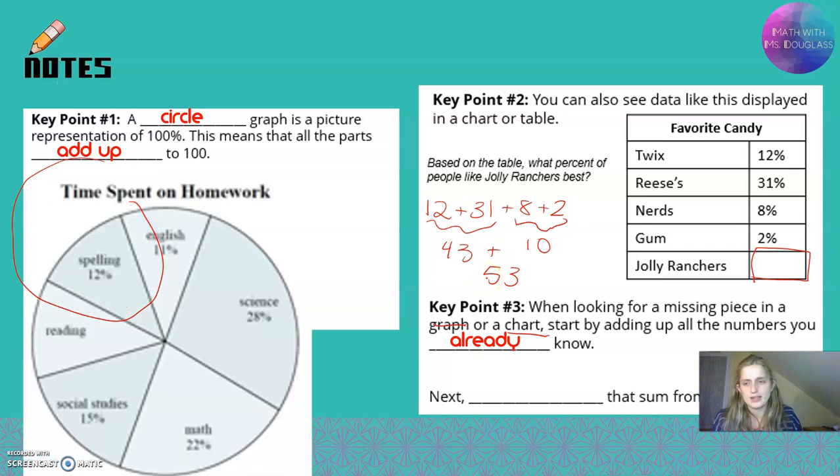On my circle graph over here we have 11% plus 28% for science, plus 22% for math, 15% for social studies, reading we don't know, and spelling is 12%. When you add all that up, that's going to be 8 plus 2 is 10, 5 plus 2 is 7, plus 1 is 8. This is 88%.